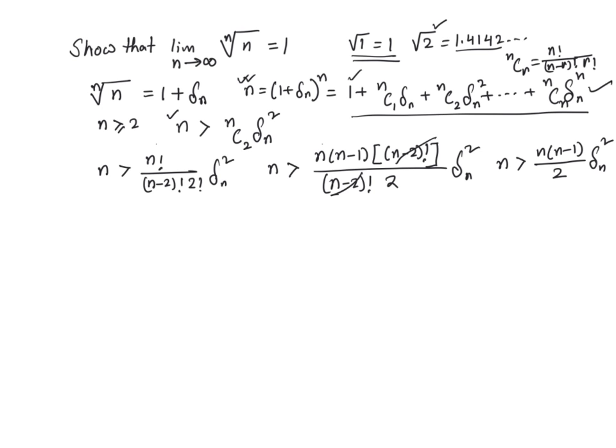Now, n is a positive number. I can divide both sides by n. That's going to give me 1 is greater than n minus 1 over 2 times delta sub n square. If I multiply both sides by 2 and then divide both sides by n minus 1, that's going to give me 2 divided by n minus 1 is greater than delta sub n square.